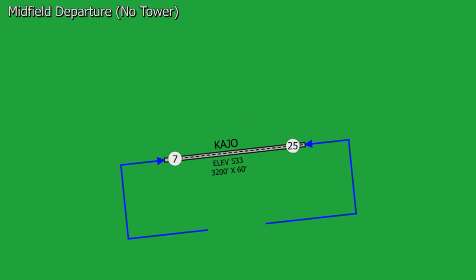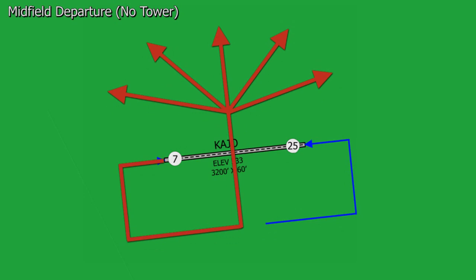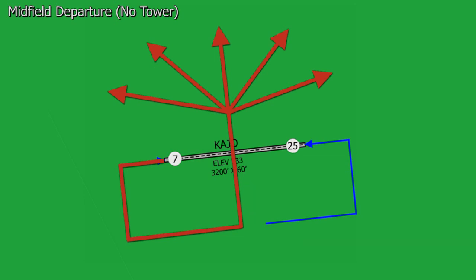If we wish to depart Corona to the north, we must do something called a midfield departure. If we take off from Runway 25, we'll fly the upwind, then turn onto the left crosswind, and then onto the left downwind. Once we are on the downwind and 500 feet above the traffic pattern altitude — in this case 2,033 feet MSL — we'll turn north and overfly the midfield. Only after overflying the midfield can we resume our own navigation.